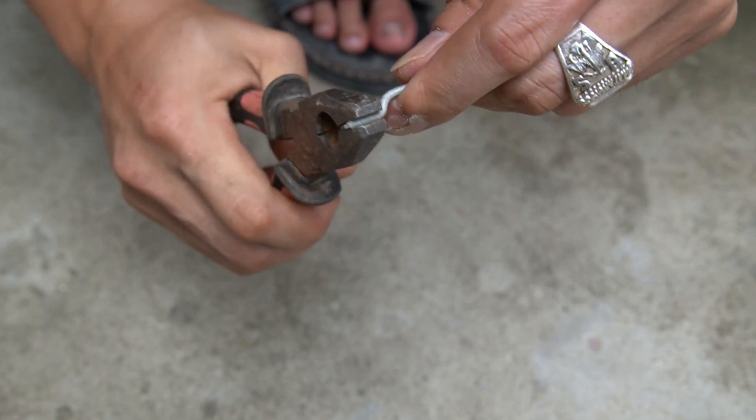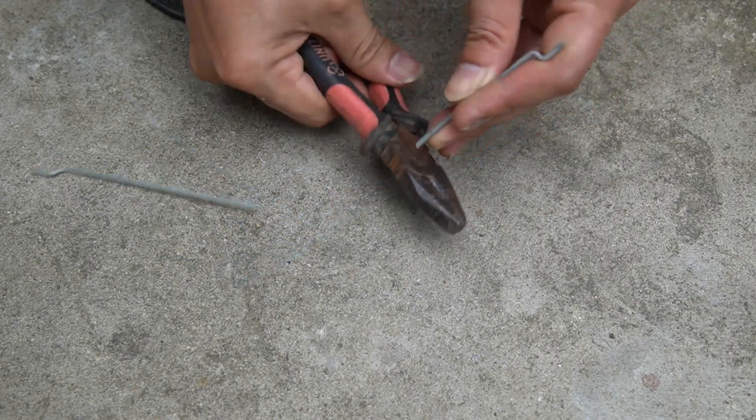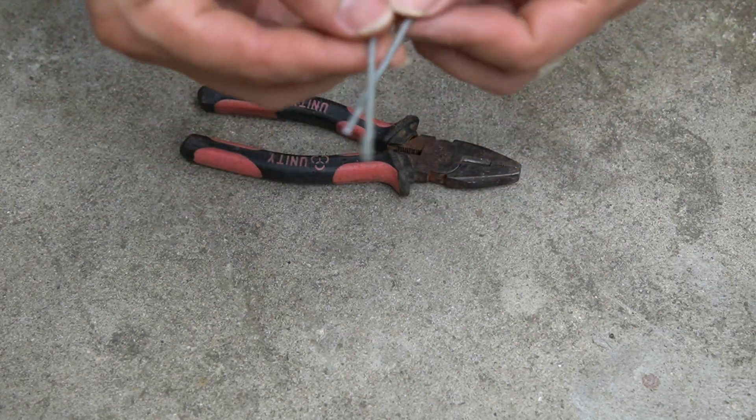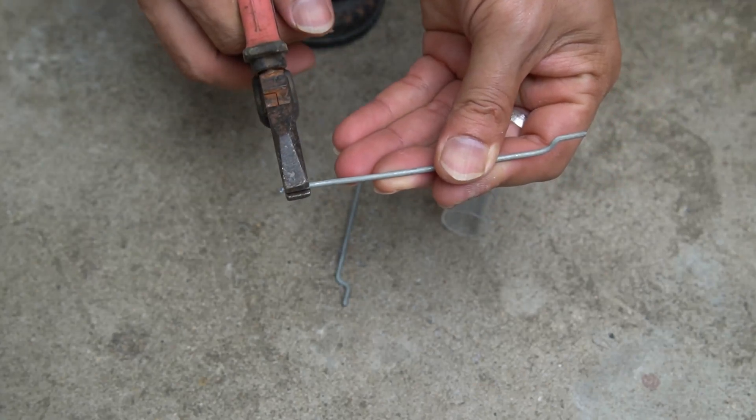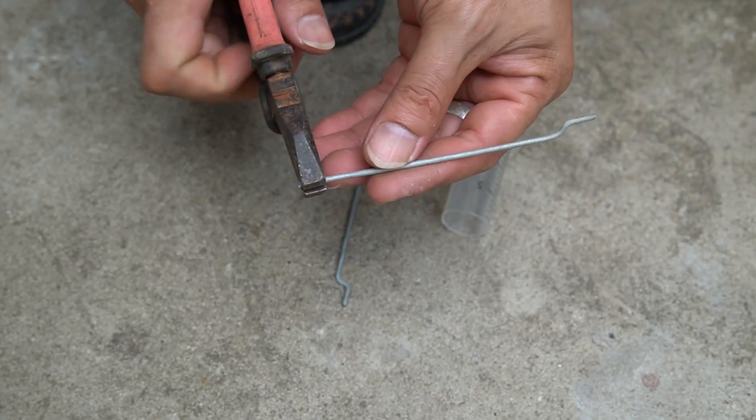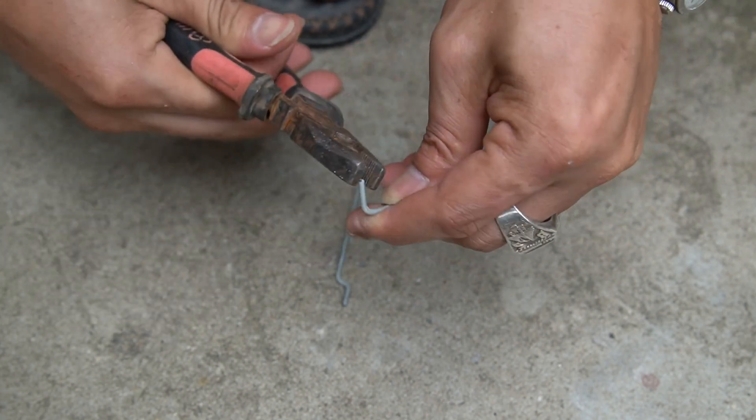Note, bend both ends of the wire. I used pliers to cut the wire in half. Continue using pliers to bend the remaining end of the wire.